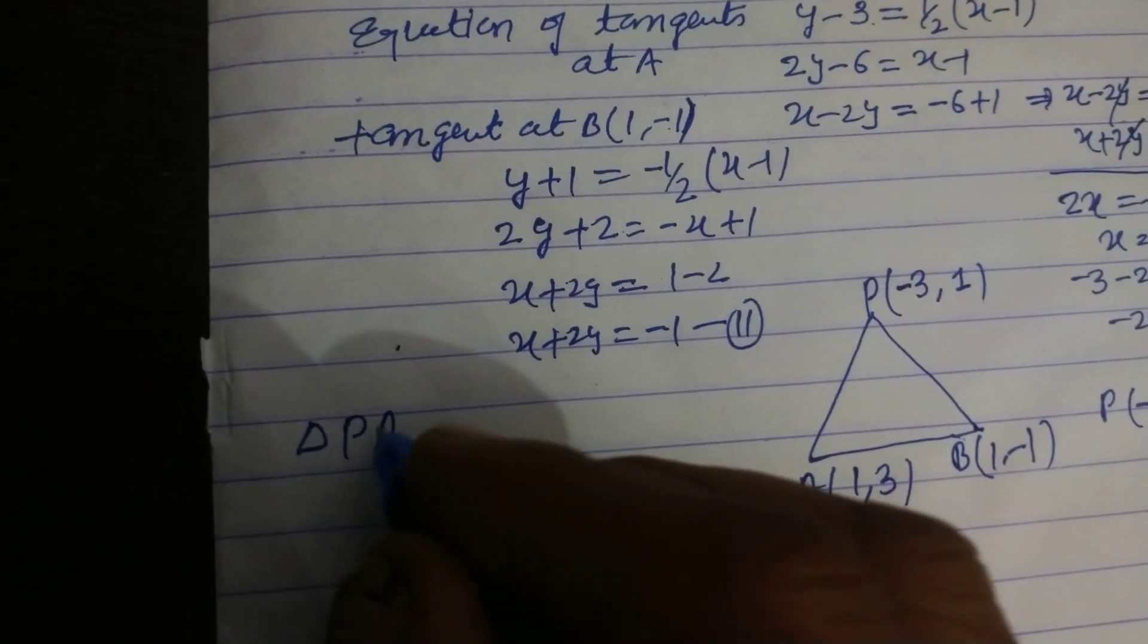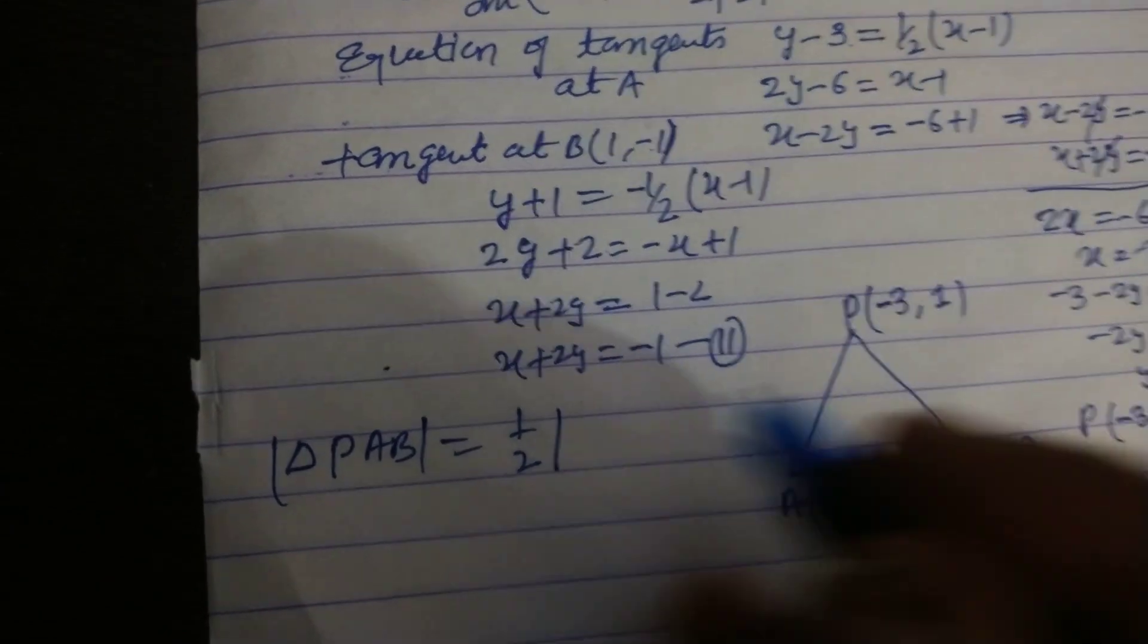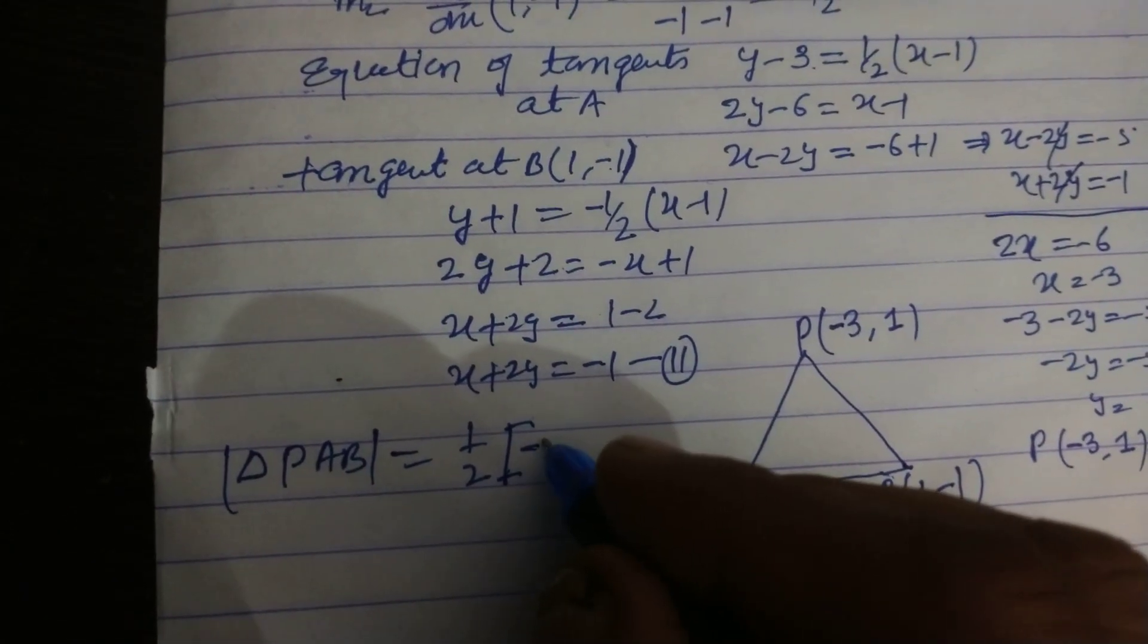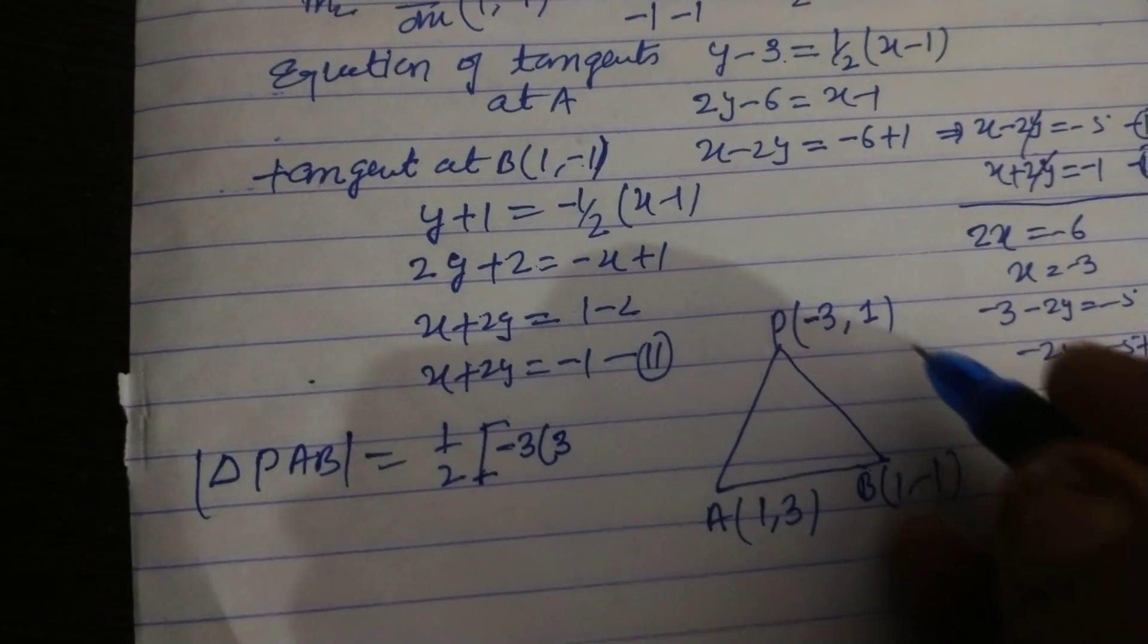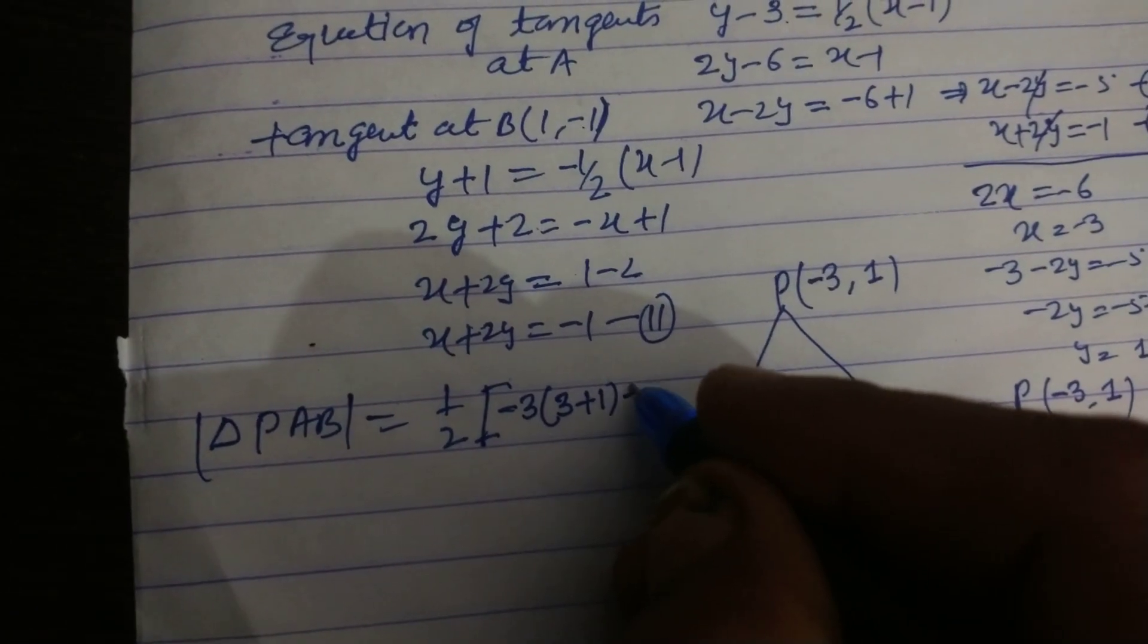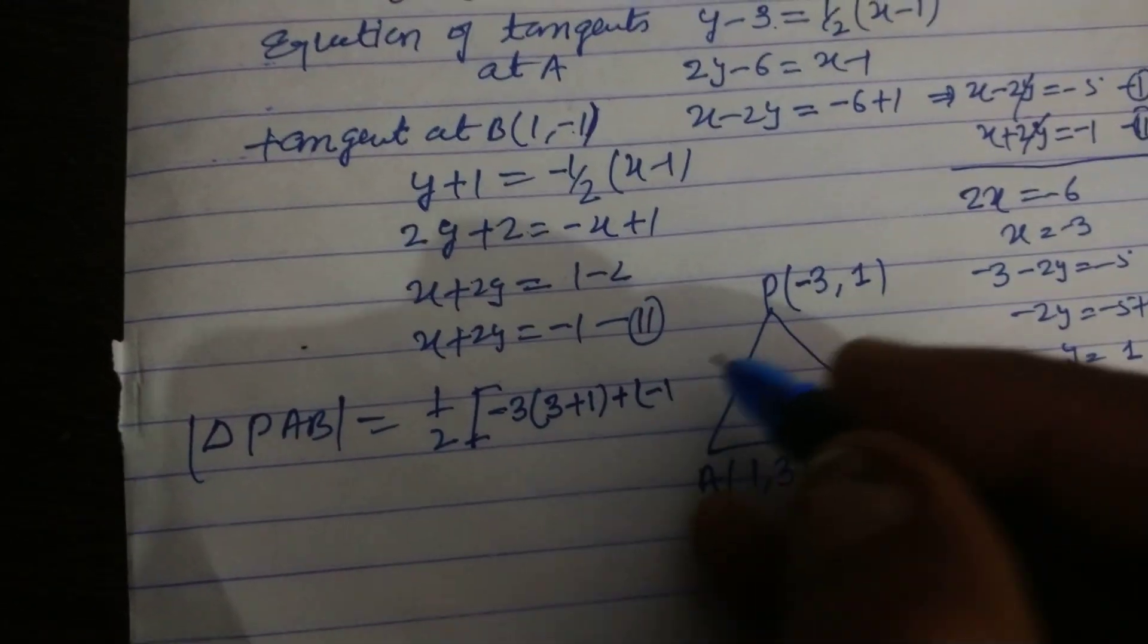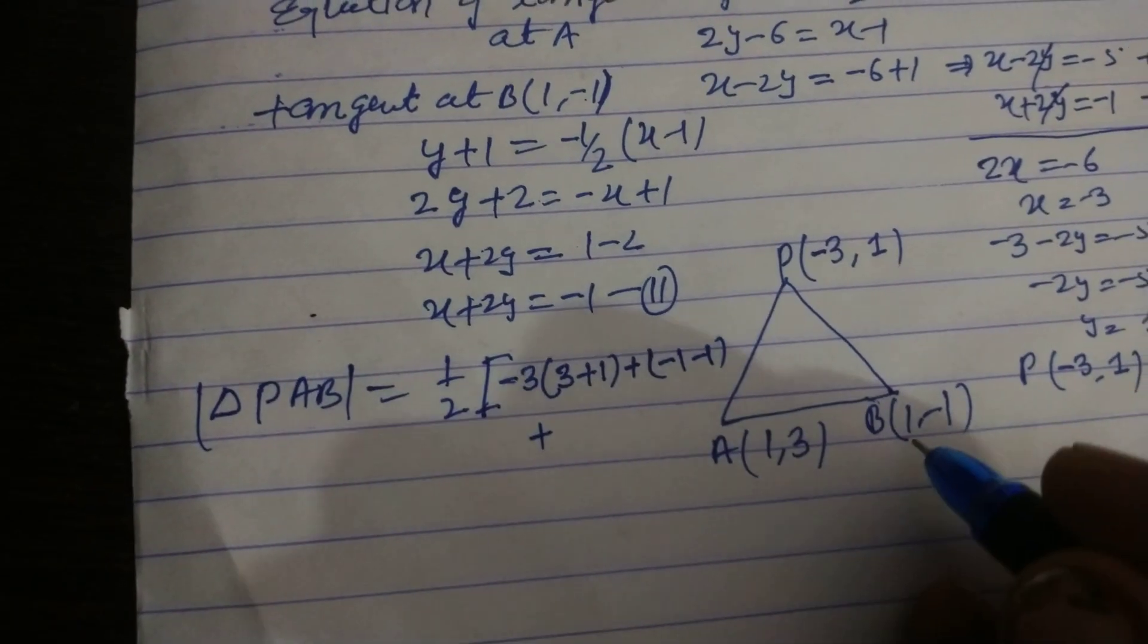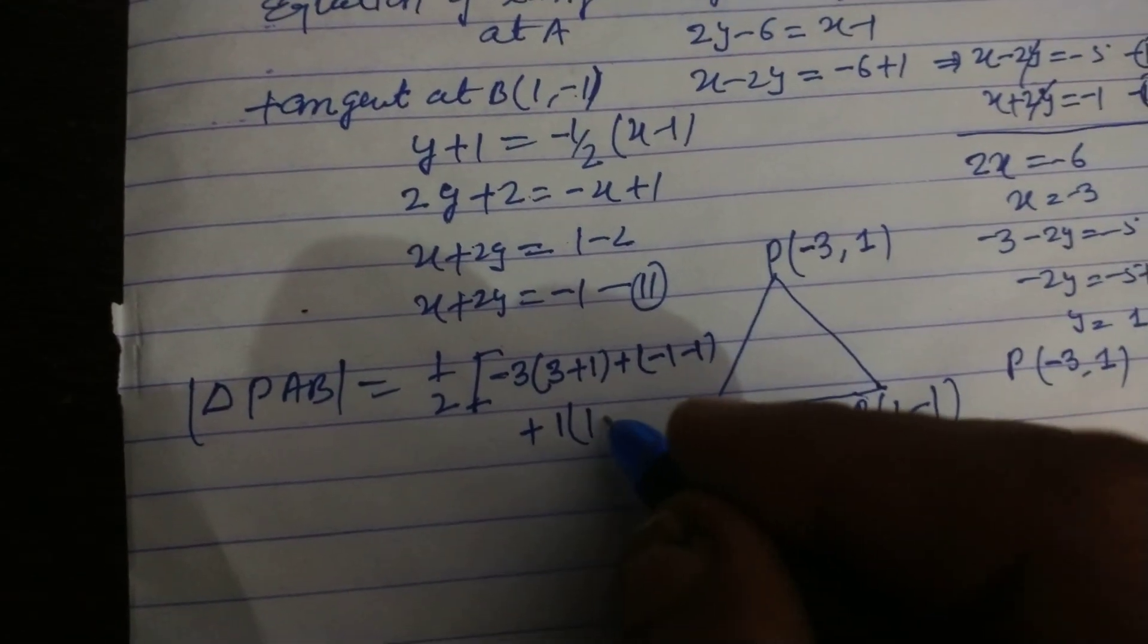Area of PAB = 1/2 of x₁(y₂ - y₃), x₁ is -3, y₂ - y₃. So x₂ is 1, y₃ - y₁, y₃ - y₁, plus x₃, y₁ - y₂.